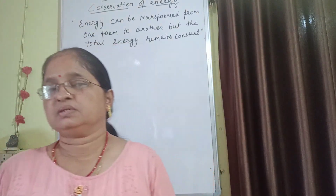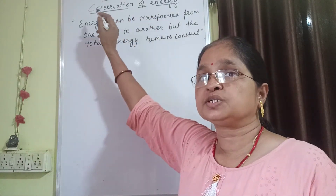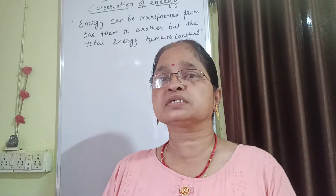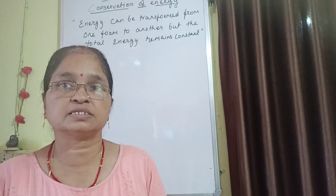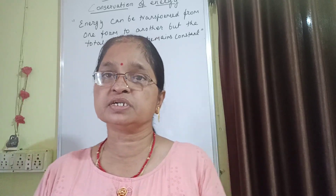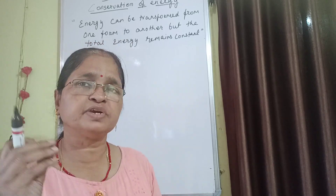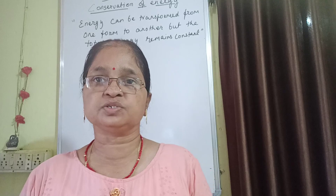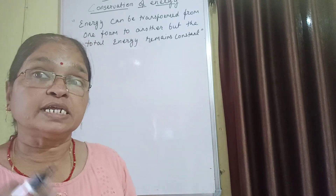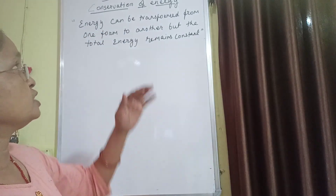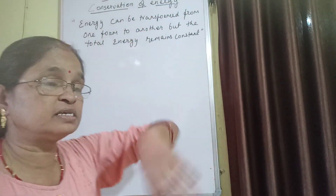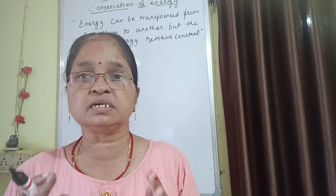Good morning students. Let's proceed with our chapter on work and energy. Today we will discuss the topic conservation of energy. Before this class, I discussed transformation of energy — energy can neither be created nor destroyed, but it is transformed from one form to another. A simple example we use at home is an iron: electrical energy changes into heat energy. That energy is conserved, and so our topic is conservation of energy. Conservation of energy states that energy can transform from one form to another, but the total energy remains constant.